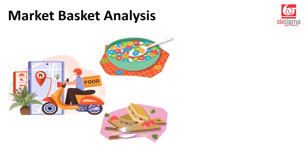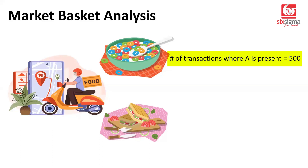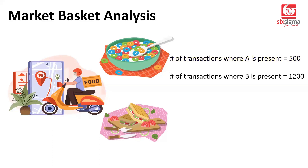So let's say at the end of the month, when the restaurant is trying to look at what all transactions have taken place, they found that item A is present in 500 transactions. And for the same duration, they found that item B is present in 1,200 transactions.